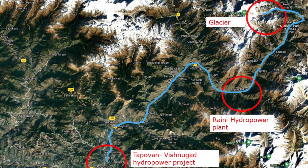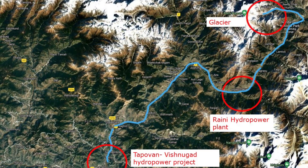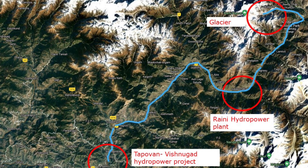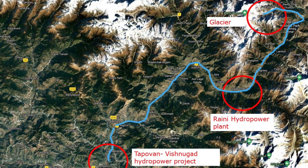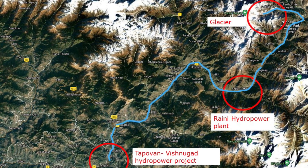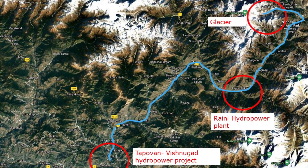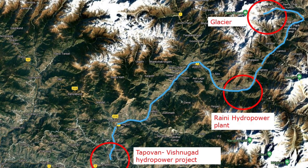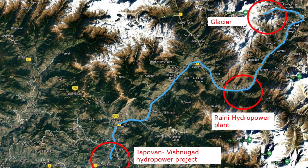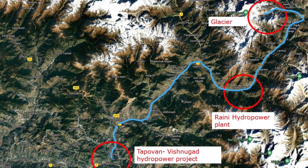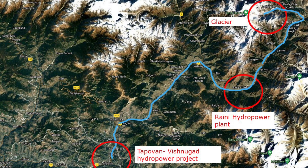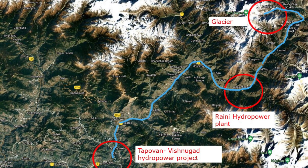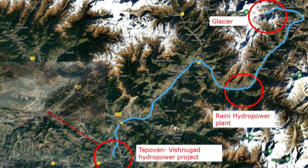A glacier may have broken off and fallen into the lake in front. This sent a shockwave downstream to the Rini power plant. The wave had been too large for the dams to hold, and the wave including more water has then been free to flow further down the river.